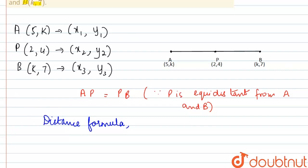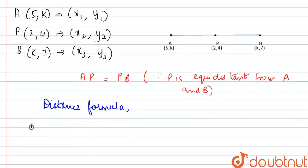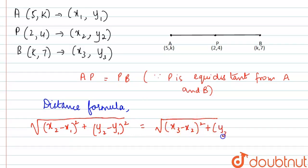So according to this we can write AP as square root of (x₂ - x₁)² plus (y₂ - y₁)². And this is equal to, similarly we'll use the formula for finding PB. So this will be square root of (x₃ - x₂)² plus (y₃ - y₂)².